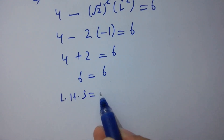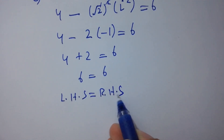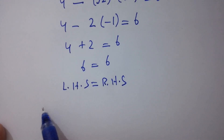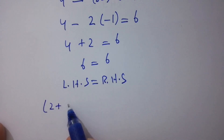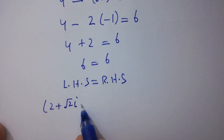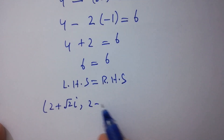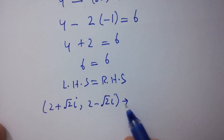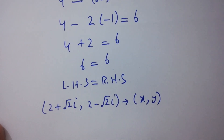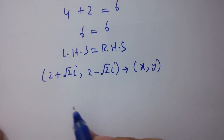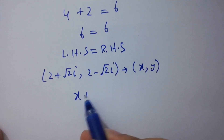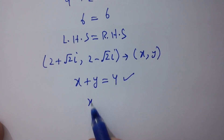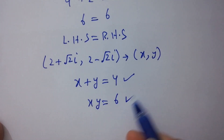Left hand side equals right hand side, which shows that the values x equals 2 plus square root of 2i and y equals 2 minus square root of 2i satisfy both equations x plus y equals 4 and x times y equals 6.